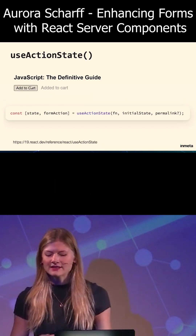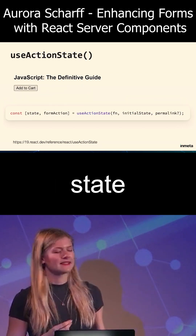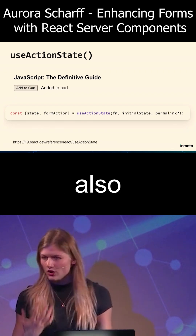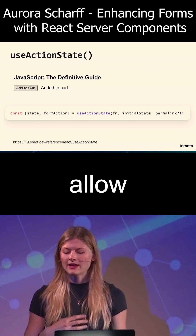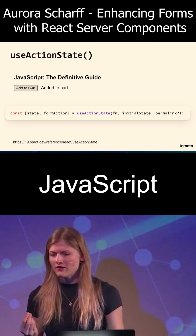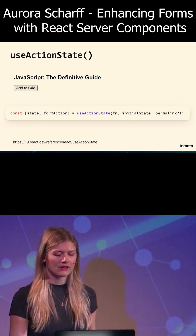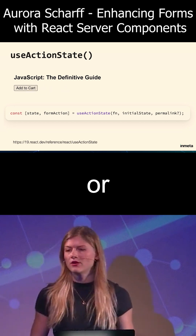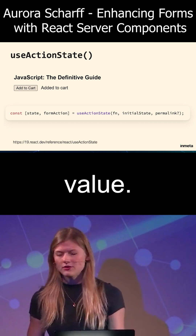useActionState is a hook that allows you to update state based on the result of an action. It also supports progressive enhancement, because it can allow the server's response to be returned without JavaScript and shown before hydration has completed. It can be used, for example, to display error messages or other information returned based on the return value.